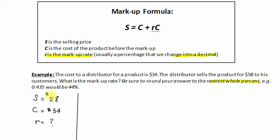Putting this into the formula S equals C plus RC, we get 58 equals the cost, which is 34, plus the rate, which is unknown, times the cost, which was 34. Writing this a little nicer, we get 58 equals 34 plus 34R.